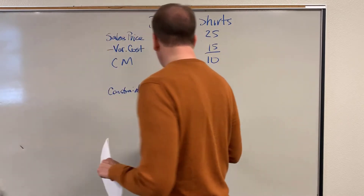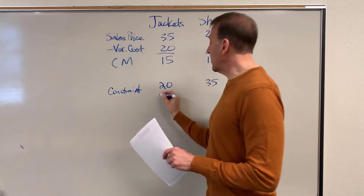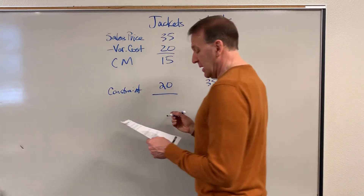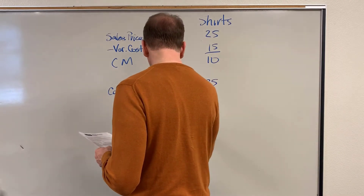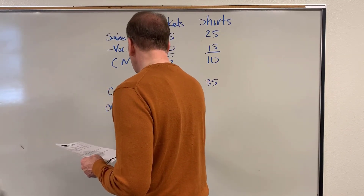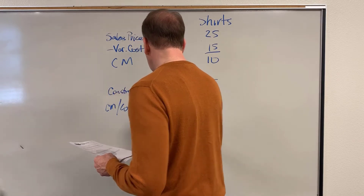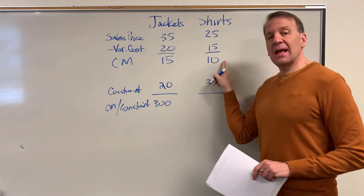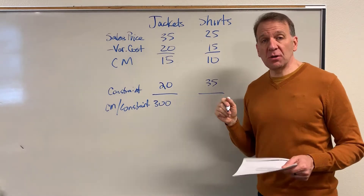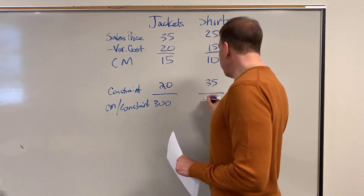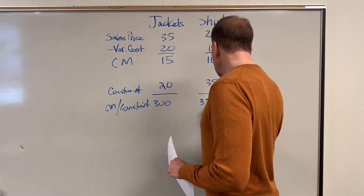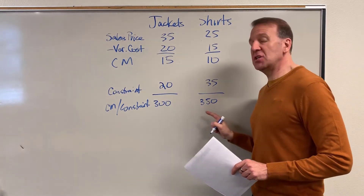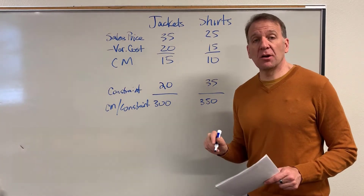In one hour, we can produce 20 jackets. Those 20 jackets times $15 per jacket gives us a contribution margin per the constraint of $300. Then we do the same thing for shirts — each shirt has $10 of contribution margin, and in an hour I can produce 35. So in an hour, my shirts actually generate a higher contribution margin.